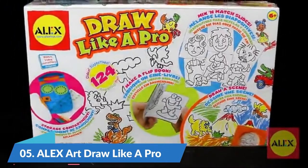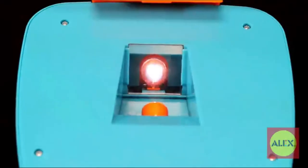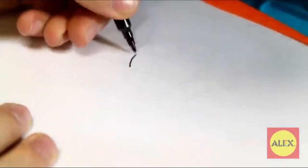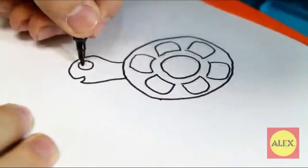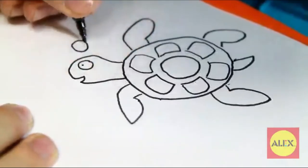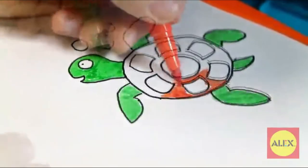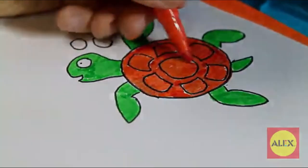Number five: Alex Art Draw Like a Pro. A fun and easy way to draw. Creative Child Magazine Parents Choice approved and Dr. Toys Best New Products Awards winner. Requires three AA batteries. Includes a projector, 124 slides, six markers, 10 sheets of paper, and a flip book. Recommended for children six years of age and older.